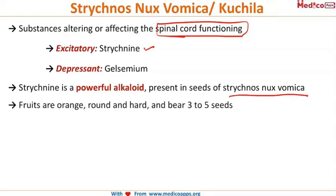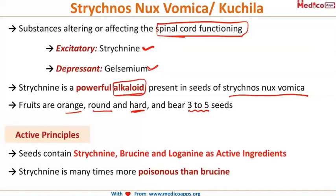The fruits are orange, round, and hard, and bear three to five seeds. The excitatory component in Strychnos nux-vomica is strychnine and the depressant is gelsemium. Looking at the active principles, there are three to five seeds in each fruit, and these seeds contain strychnine, brucine, and loganin — these are the active ingredients.